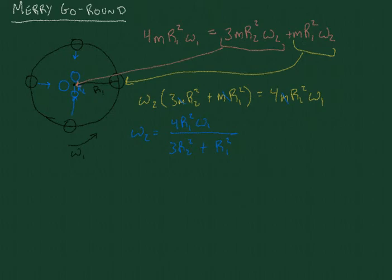Alright, now let's see what this would mean with some numbers. So let's say initially R1 is 2 meters, and then R2 is 1 meter. So all the children moved in half the distance of the merry-go-round.